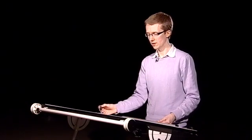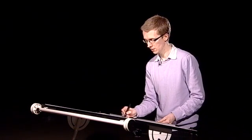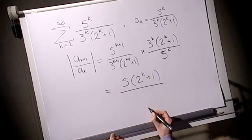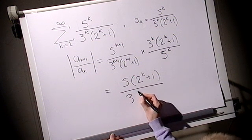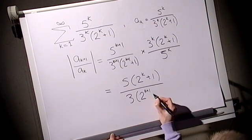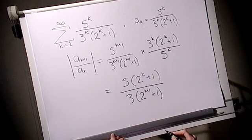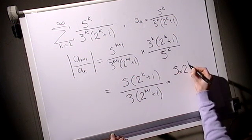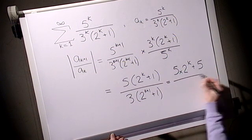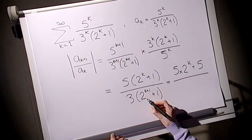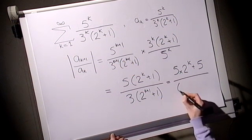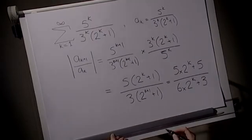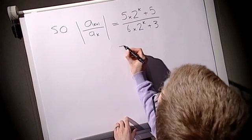And luckily for us, lots of these terms cancel. We end up with 5 times 2 to the k plus 1 on the top. On the bottom, 3 multiplied by 2 to the k plus 1 plus 1 on the bottom. If we expand that slightly, we've got 5 times 2 to the k plus 5. Over here, let's take one of the twos out, and we have 6 times 2 to the k plus 3. So we're up to here.